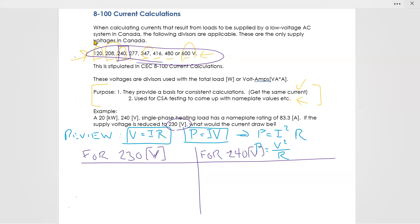Now this is not to code. It is not to code for section 8 rule 100 current calculations because you have to divide by a standard voltage, which is 240 in this case. So I am saying, what would the current draw be? Let me read the question. A 20 kilowatt, 240 volt, single phase heated load has a nameplate rating of this current. If the supply voltage is reduced to 230, what would the current draw actually be?